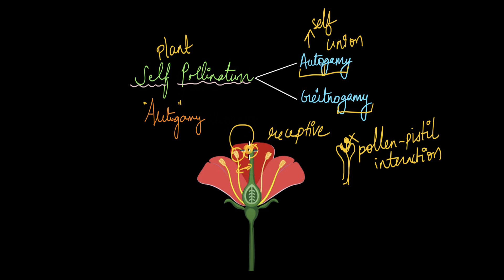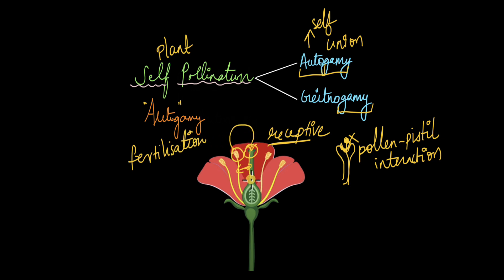The stamen and pistil must be located very close together, and the timing of pollen grain release must coincide with when the stigma is receptive. Autogamy is especially helpful when the plant population has decreased in an area and plants need to increase their numbers, because autogamy assures that fertilization will take place — the pollen grains are transferred, the pollen tube germinates, and the male and female gametes fuse. Fertilization and seed production are entirely guaranteed, which is why autogamy is preferred in plants that need to increase their population quickly without relying on pollinating agents.